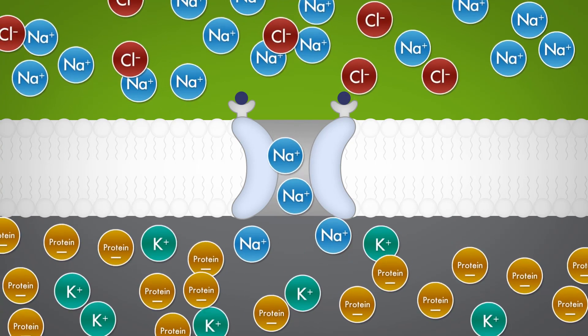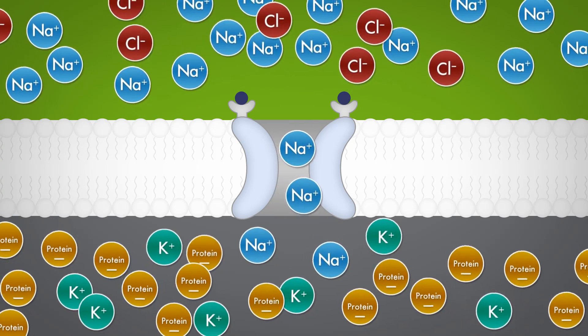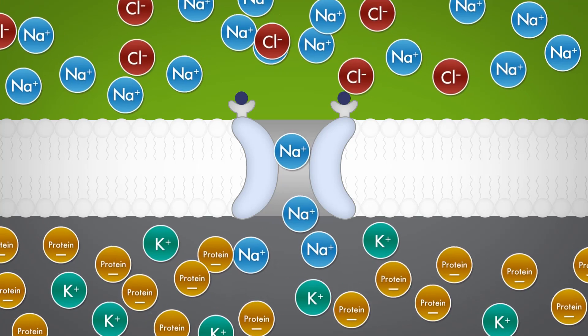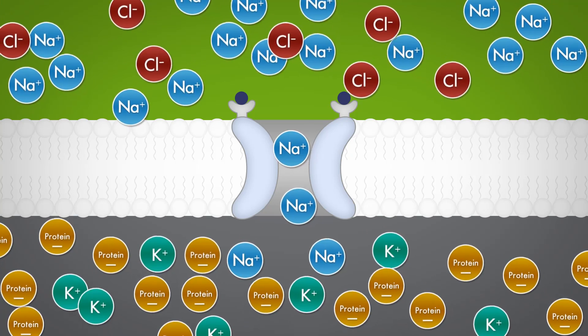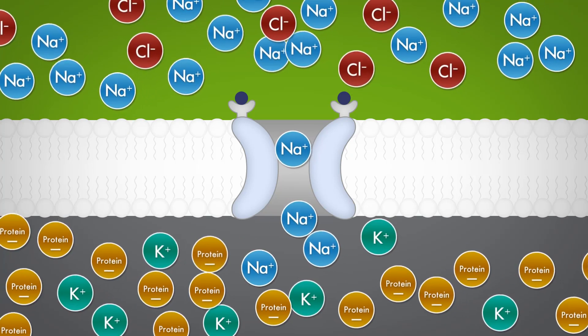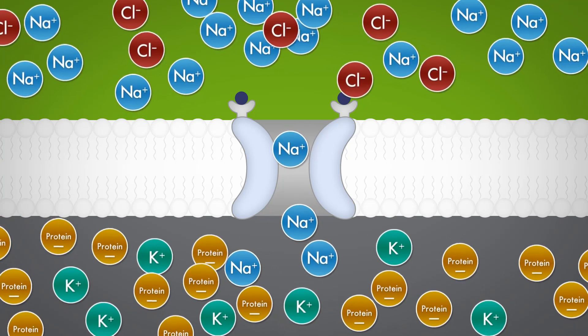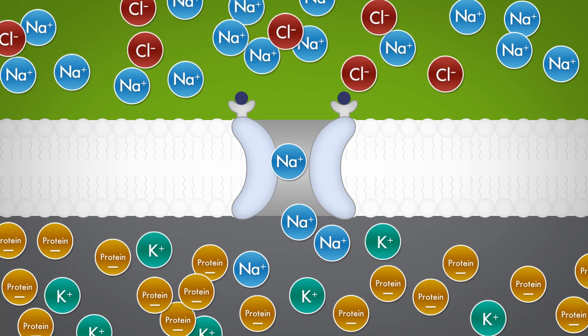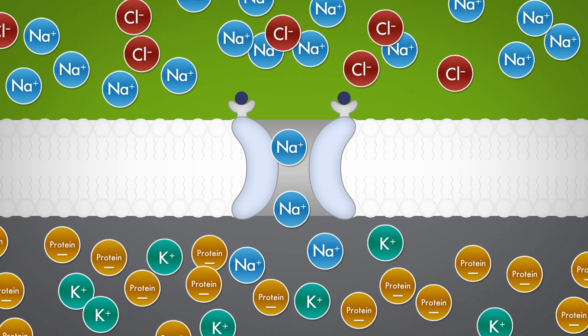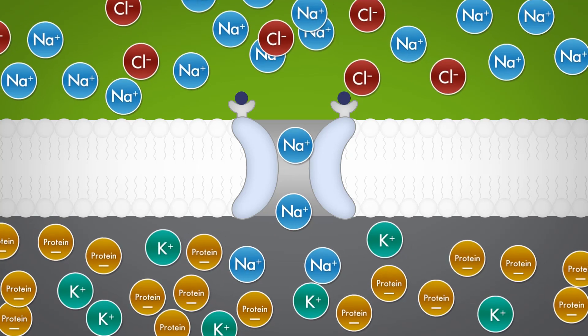Once inside the cell, the ions can alter the local membrane potential and increase or decrease the likelihood of an action potential.